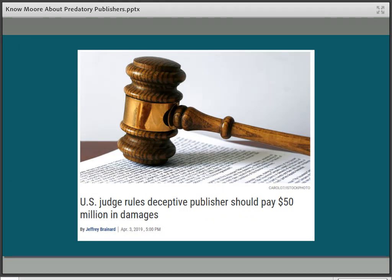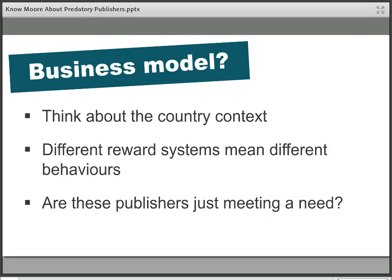Somewhat more happily, the academic community is starting to pick up on this problem. In 2019, the OMICS Publishing Group was taken to court in the US and found guilty of deceiving researchers over the services they provided — they claimed to provide peer-reviewed scholarly output but were found guilty of lying. They were told to pay fifty million dollars in damages to the researchers in the case. While the judgment raised awareness and found one of these companies guilty for the first time, because the publishing company is not based in the US, it's doubtful whether anyone will actually see the money.